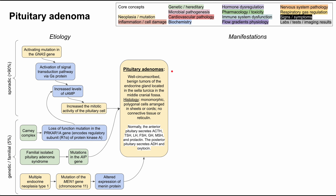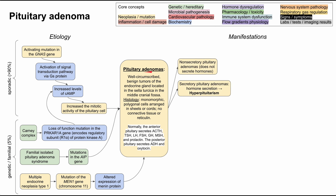Now that we know the etiology, we can talk about the manifestations of pituitary adenoma. These adenomas can be broken down into non-secretory and secretory pituitary adenomas. The non-secretory pituitary adenoma usually manifests due to its mass effect — when the tumor gets big enough to compress or displace adjacent structures.